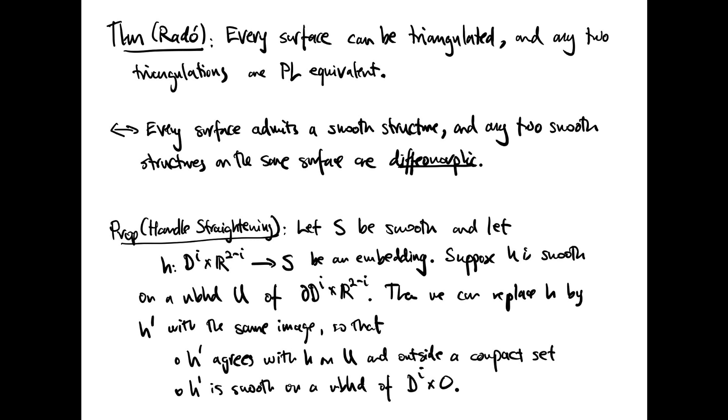Every surface, finite type or not, can be triangulated by a theorem of Radó. And any two triangulations of a surface are piecewise linear equivalent, meaning that they have common subdivisions which are isotopic. It's not so hard to show that this is equivalent to the statement that every surface admits a smooth structure and any two smooth structures on the same surface are diffeomorphic.